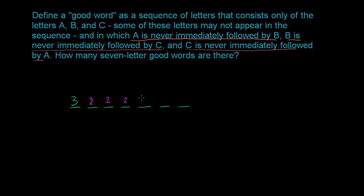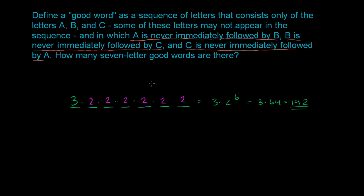The same logic applies throughout: no matter what letter is in any position, it rules out one possibility for the next, leaving only two choices each time. So the total number of possibilities is 3 times 2 times 2 times 2 times 2 times 2 times 2 — that's 3 times 2 to the sixth power, which equals 3 times 64, giving us 192. There are 192 possible seven-letter good words.